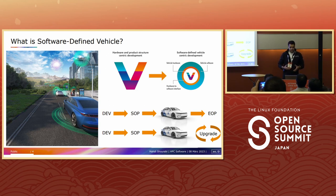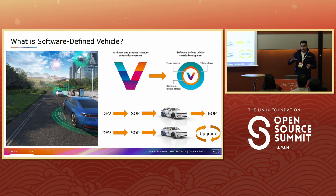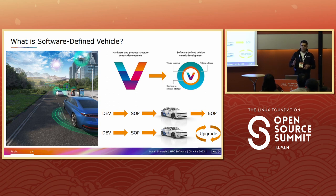A hardware defined vehicle — which is the current development model of the current automotive industry — uses software as an enabler to develop a vehicle and push it toward SOP, or start of production. After that, design and development stops, and the production line continues manufacturing this vehicle for a couple of years, after which this vehicle is no longer available.